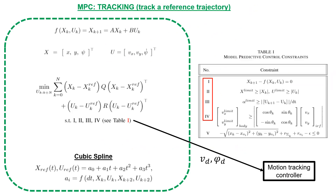MPC in the tracking step is similar to the planning step; however, we add another state and control variable signifying the heading angle and angular velocity of the robot. Because the goal in the tracking step is to follow a reference trajectory, this reference trajectory is included in the MPC cost function and is created using a cubic spline between two waypoints generated by the planning step. We also include constraint 4, which ensures the robot always faces in the direction of the trajectory. The outputs ultimately serve as input to our motion tracking controller to make the robot move.